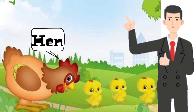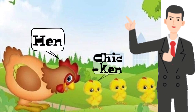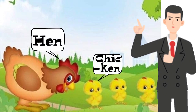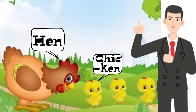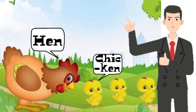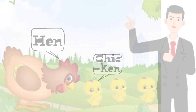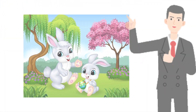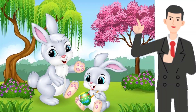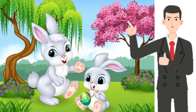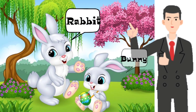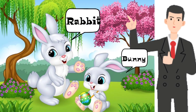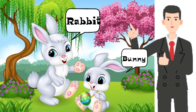Hen, Chicken. Young one of hen is Chicken. This is Rabbit and this is Bunny. Young one of rabbit is Bunny.